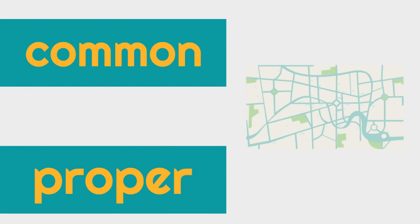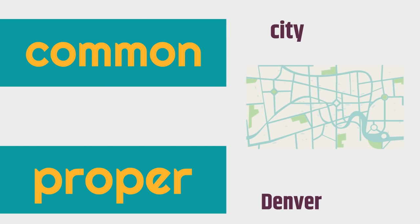Now this is our final one. The common noun of this — this is a map of a city. City would be the common noun. Notice the lowercase letter. It's the type of person, place, or thing. Now, let's say this city is Denver. Denver would be the proper noun. Notice it's an uppercase or capital letter because it's the proper noun — it's the specific thing that it is, because it's Denver.